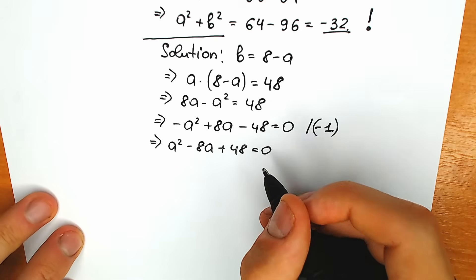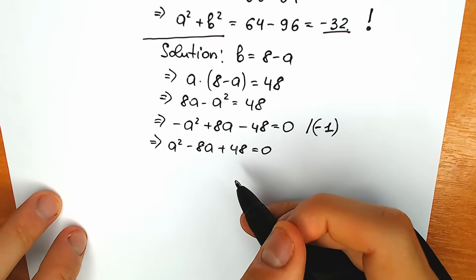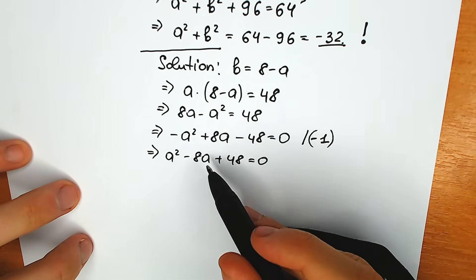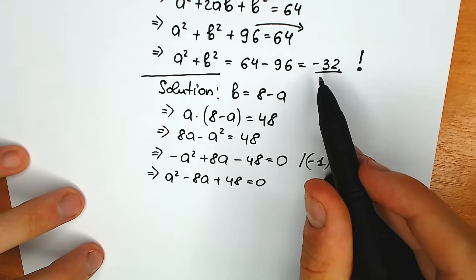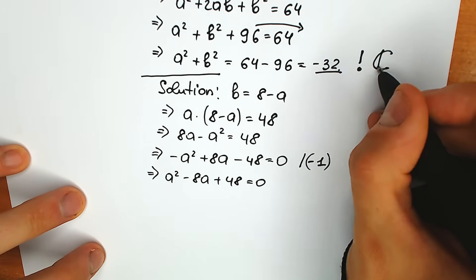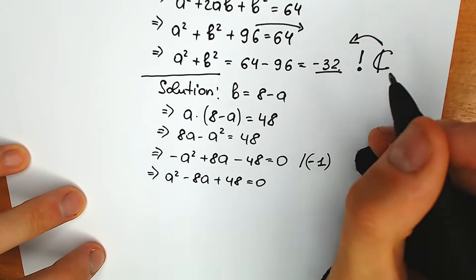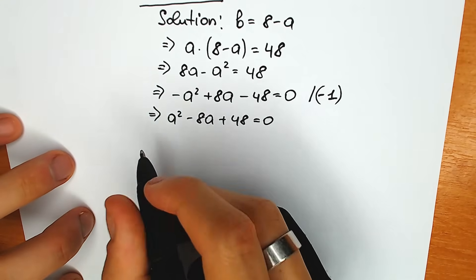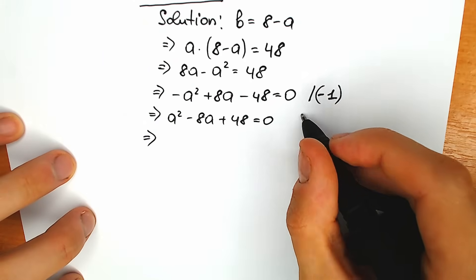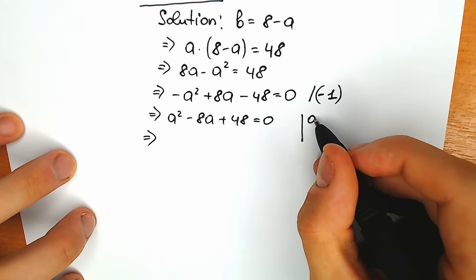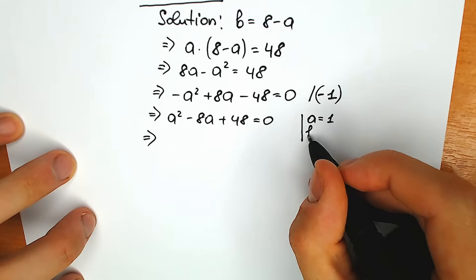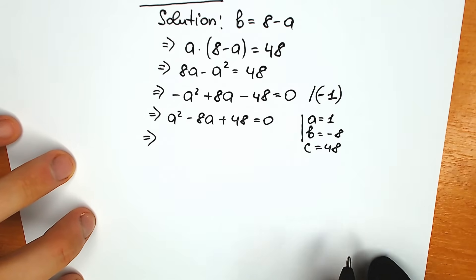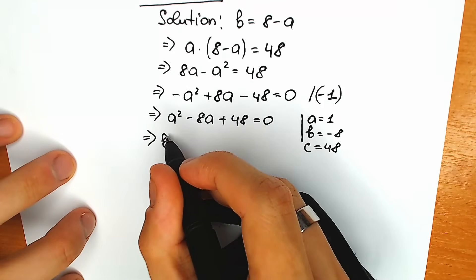So a squared minus 8a plus 48. Now let's solve it. We already know from our quick proof that we don't have real numbers, so we can easily confirm that we have only complex roots, meaning our discriminant should be negative. Let's check it using the basic method of coefficients: a equals 1, b equals minus 8, and c equals 48. With this method we can find our discriminant quickly.